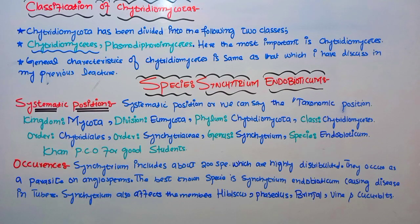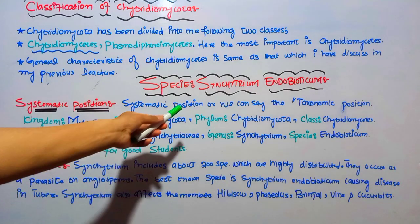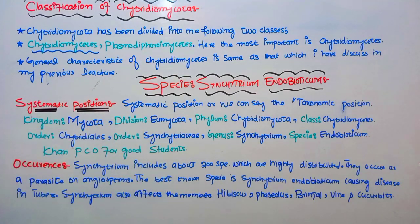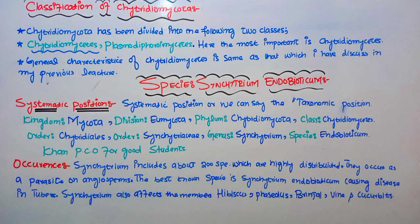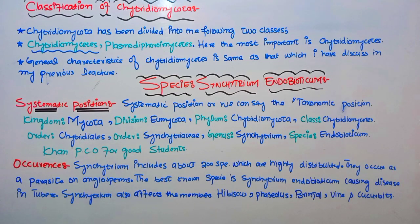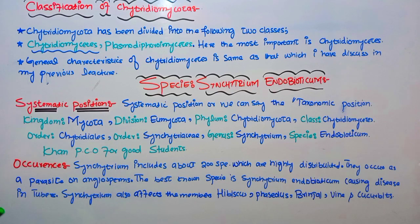There is an important species called Synchytrium endobioticum, which is very important for exams — there is almost no exam in which Synchytrium doesn't appear. First of all, we will discuss its systematic position: which division, which class, which order it belongs to. When we discuss a species in terms of kingdom, division, phylum, class, and order, we call that the systematic or taxonomic position.